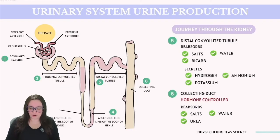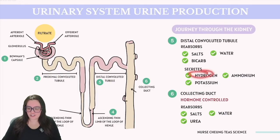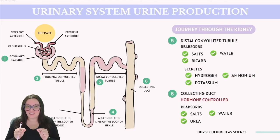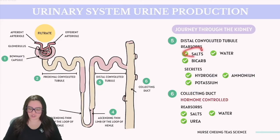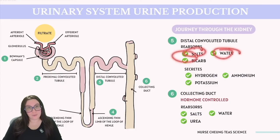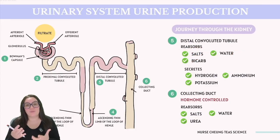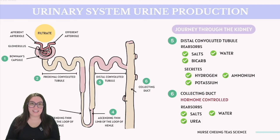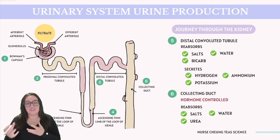Now we've moved on to the distal convoluted tubule. Substances like hydrogen, potassium, and ammonium are secreted into the filtrate in this section. Meanwhile, salts, water, and more bicarbonate are reabsorbed from the filtrate back into the interstitial fluid. The distal tubule plays a crucial role in pH regulation by readjusting the secretion and reabsorption of these substances.